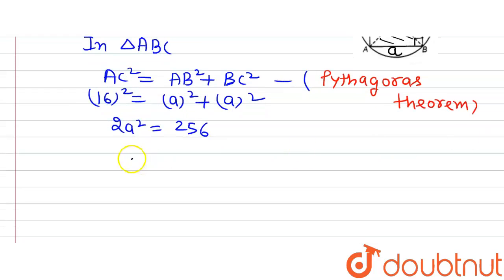Now this 2 will go to the right hand side of the equation and we will have A square is equal to 1 divided by 2 multiplied by 256, which will give us 128 is equal to A square.